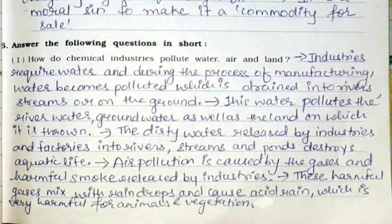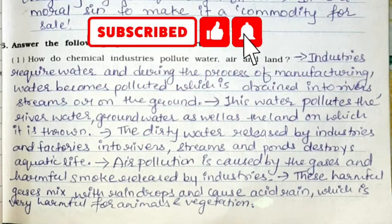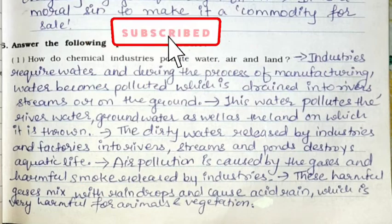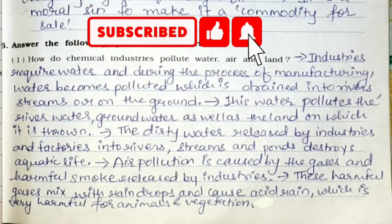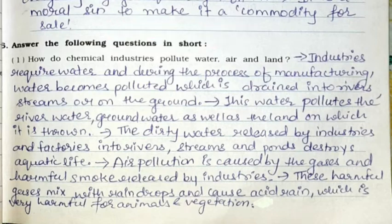Now we will continue with question number six, answer in short. First question: how do chemical industries pollute water, air and land? Industries require water and during the process of manufacturing, water becomes polluted which is drained into rivers, streams or on the ground, polluting river water, ground water and the land. The dirty water released into rivers, streams and ponds destroys aquatic life. Air pollution is caused by the gases and harmful smoke released by industries, which mix with raindrops and cause acid rain.